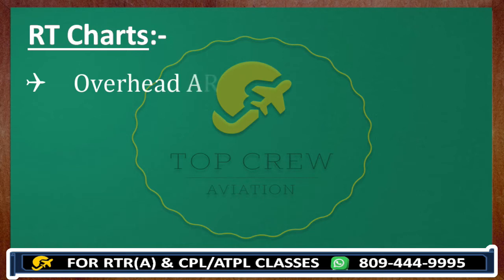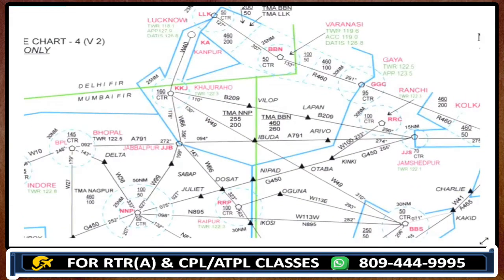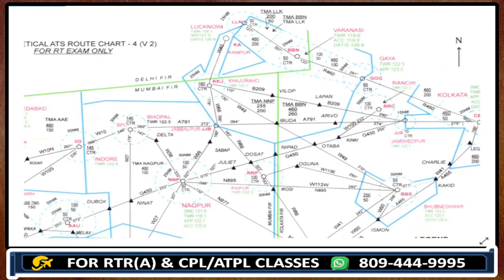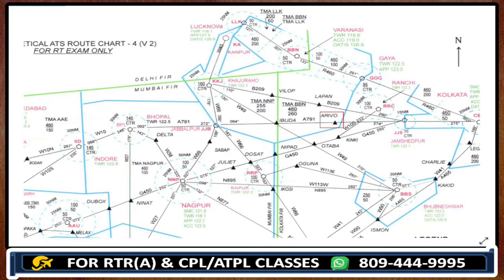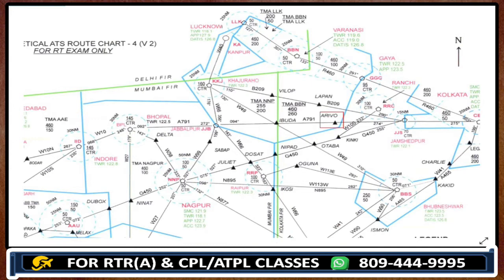Next I gave you Arrivo at flight level 210. This is also in chart number 4. You have to find out your ATC. There is no tower available nearby, no approach available. Arrivo comes under Varanasi TMA. What mistake do you guys make? You choose Varanasi control and forget about the vertical separation. That is why I told you each and everything before proceeding further, so that you do not make any kind of mistake.